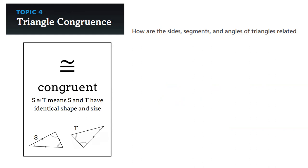S is congruent to T means S and T have identical shape and size. We're talking about the whole triangle here.